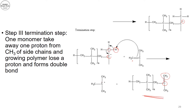Sometimes the carbon cation accepts a proton from the double bond, so it becomes CH3 and there is a new carbon cation. However, the growing of that part will not continue. The growing of the main polymer chain stops in the termination step by the attack of one of the double bonds on one of the side chains of the growing polymer, creating an unsaturated side chain which stops the polymer from growing further.